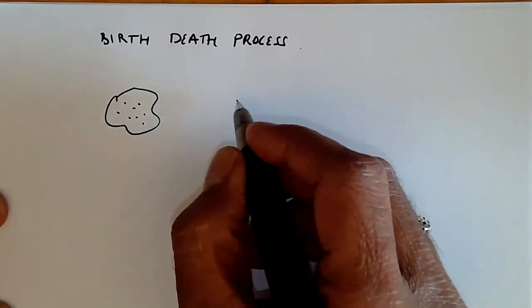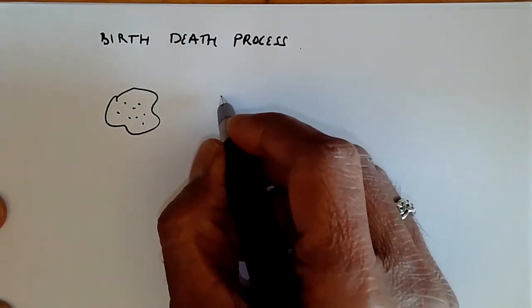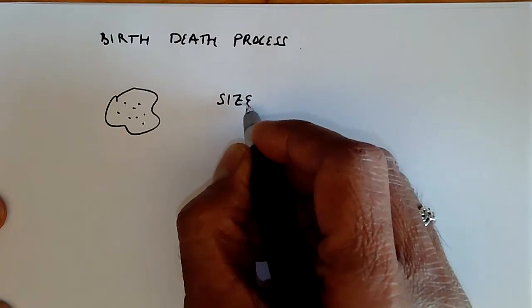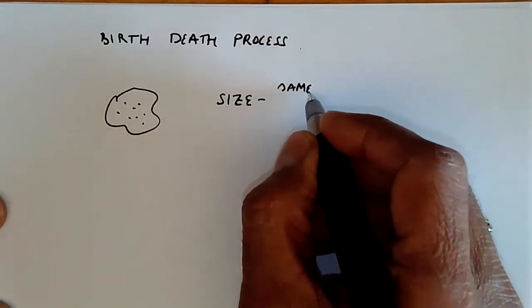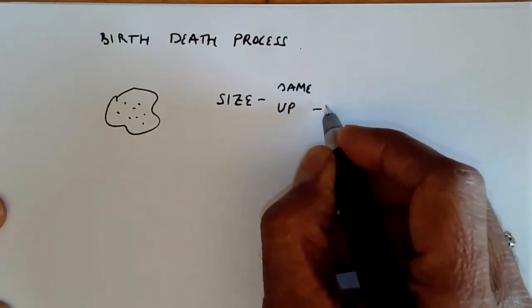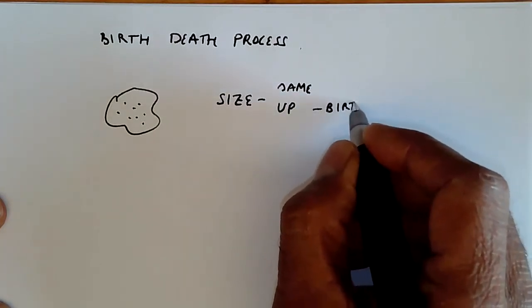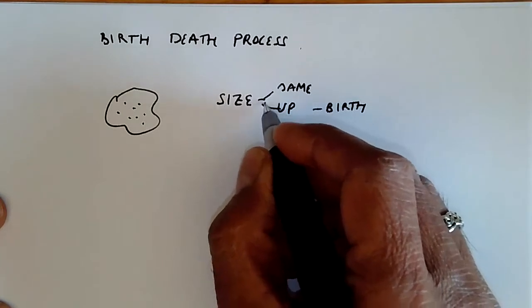We can think of the population size as basically either staying the same, or it can go up, which is a birth, or it can go down, which is a death.